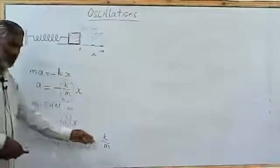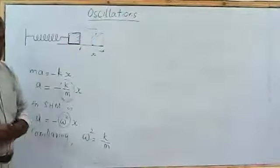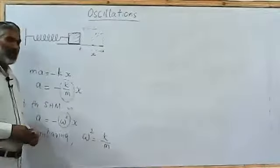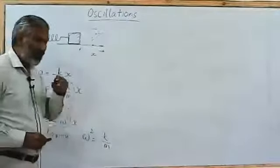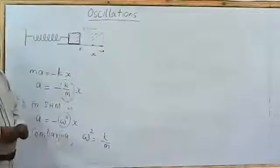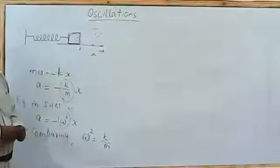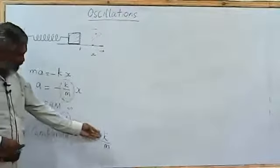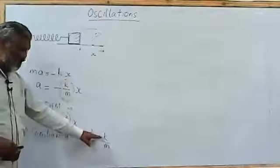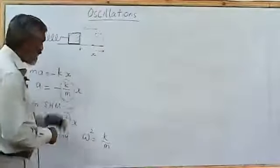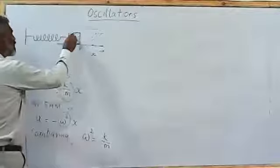And mass was not appearing in the expression for simple pendulum. That means for simple pendulum, ω does not depend on the mass of the simple pendulum. It only depends on the length of the pendulum. But here, it depends on two things. One, it depends on the spring constant involved, and the other is the mass you have attached to it, which is this mass.